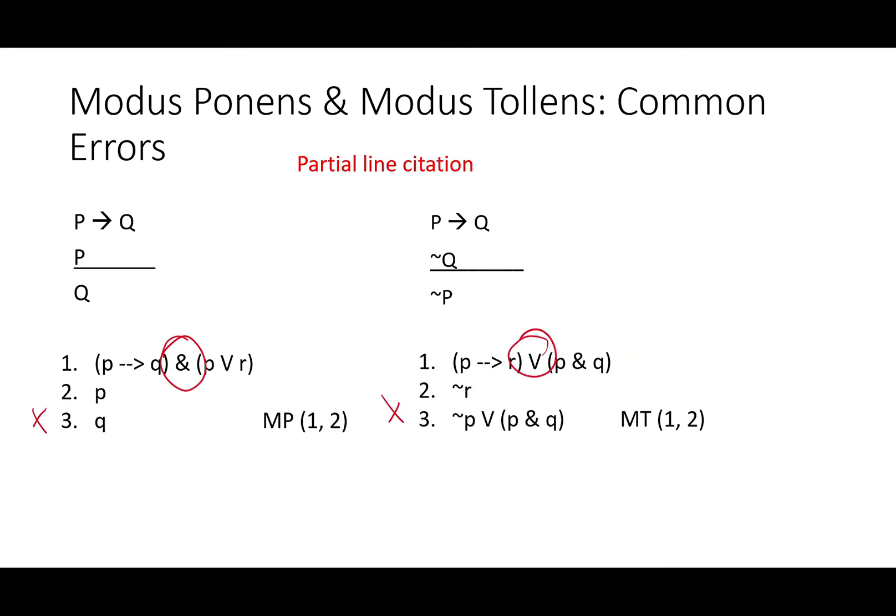There are other ways partial line citation occurs. Your main operator might be an ampersand — you might be tempted to say: 'if P then Q' and 'either P or R', P, so Q. That's actually a valid inference, but it skips a step. You need to do simplification first because the arrow is not the main operator. Similarly, you might attempt modus tollens on 'if P then R or (P and Q)', with not R giving 'not P or (P and Q)'. But again, you can't do modus tollens on a partial line — you'd need a rule to get that conditional by itself as the main operator.